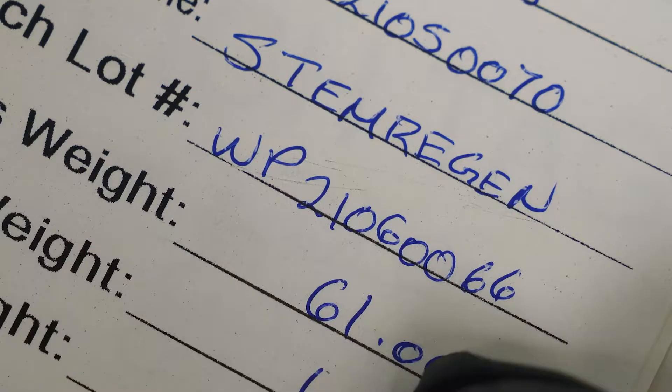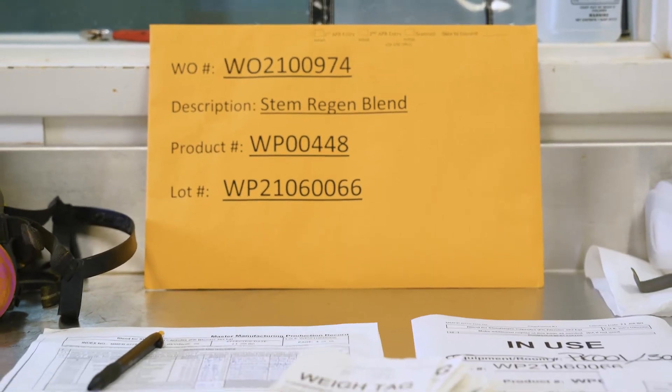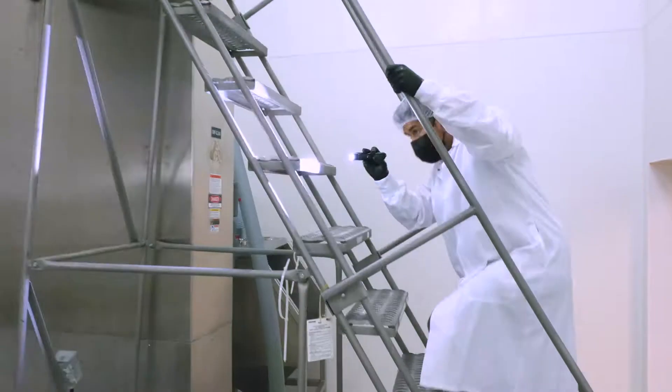The first step of the manufacturing process, referred to as compounding, consists in weighing the precise amount of each of the ingredients coming from all corners of the world according to Stemregen's proprietary formulation. Prior to blending and processing,